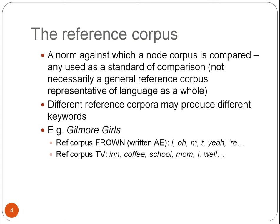In the case of FROWN, keywords such as 'yer' and contractions point to the fact that the Gilmore Girls data are spoken, whereas the reference corpus is written. Word forms like 'oh,' 'yer,' and contractions are not necessarily unique or special to Gilmore Girls. When I compare Gilmore Girls data to other TV data, I get keywords that point more to specific aspects like the TV series locations, topics, and character relations.